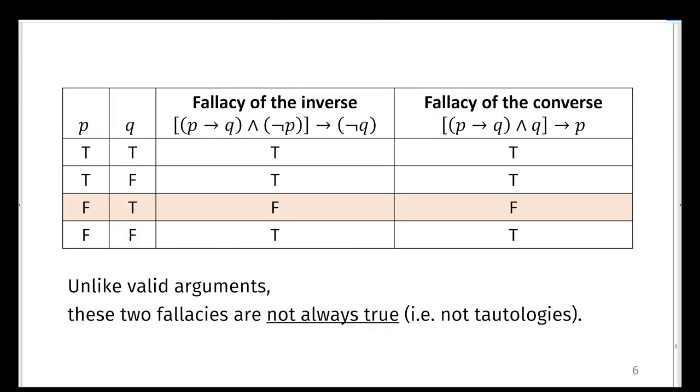So here are the fallacies of the inverse and the fallacy of the converse when displayed in a truth table. Unlike valid arguments where there's only one truth value, namely true, these two fallacies are not always true. In the highlighted case where P is false and Q is true, both fallacies become false. So the fallacies are not tautologies.